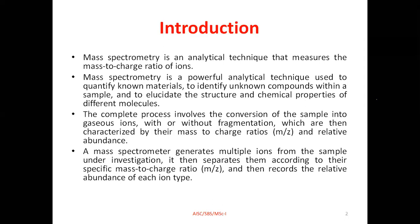The complete process in mass spectroscopy involves the conversion of a sample into gaseous ions, with or without any fragmentation, which can then be characterized by their mass-to-charge ratio (M/Z or M/E) and their relative abundance. The mass spectrometer generates multiple ions from the sample under investigation, separates them according to their specific mass-to-charge ratio, and records the relative abundance of each ion type in the mass spectrum.